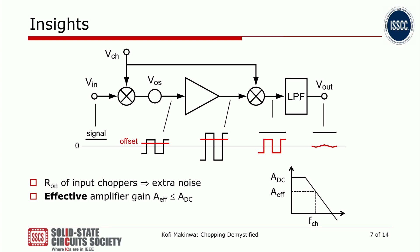Another thing we can see from this block diagram: a chopper is basically a collection of switches. These switches will have a certain on-resistance, and therefore a certain amount of thermal noise — so that's also something to keep in mind. And last but not least, the amplifier is now processing signals at the chopping frequency, so its effective gain is no longer its DC gain, but its gain at the chopping frequency, which will typically be less than its DC gain.